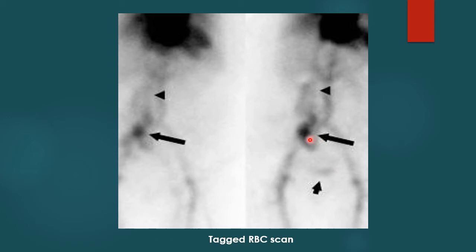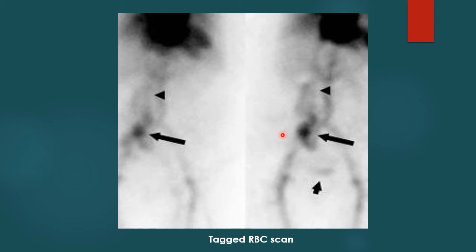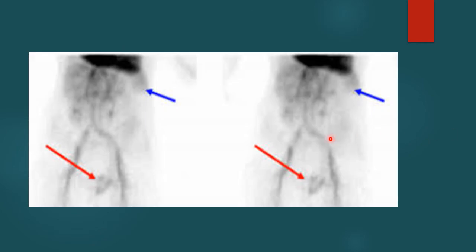This shows a tagged RBC scan — tagged red blood cells are injected into the patient and a scan is done over the abdomen. There is extravasation of tagged RBCs in the right iliac fossa region, near the iliac arteries and aorta, indicating bleeding in that region, most commonly in the cecum or ascending colon. Another view shows another leakage of tagged RBCs lower down, probably in the sigmoid colon or rectum.